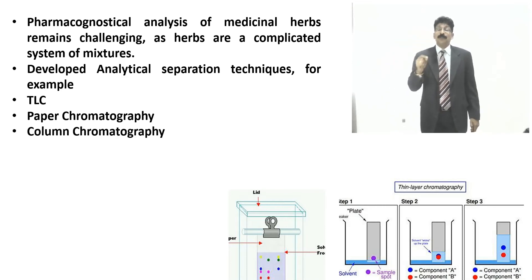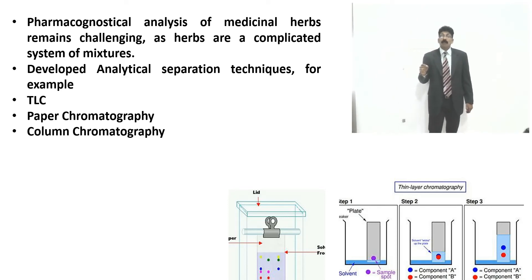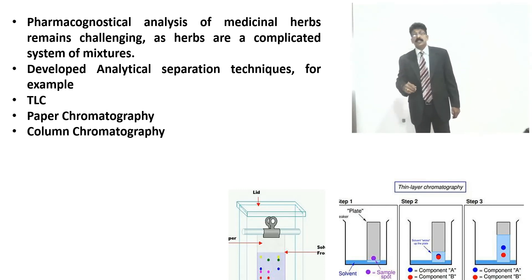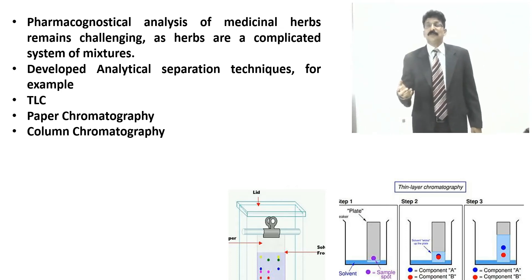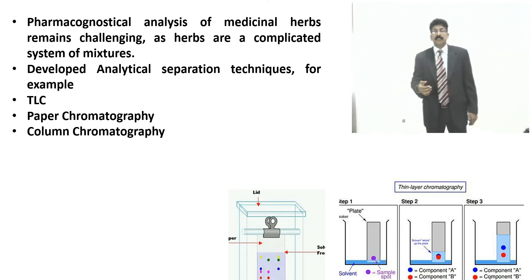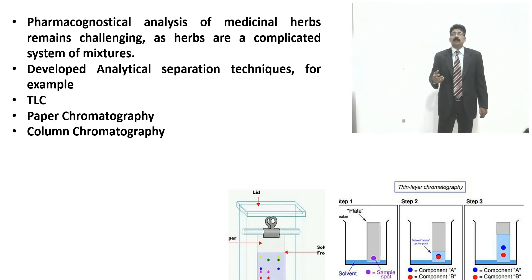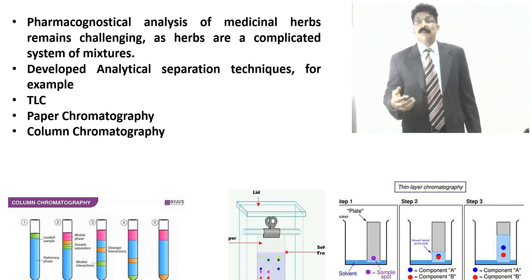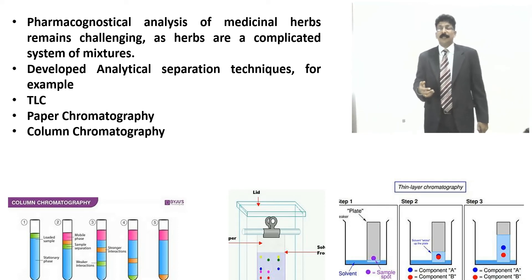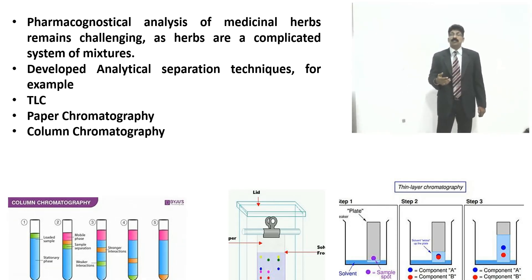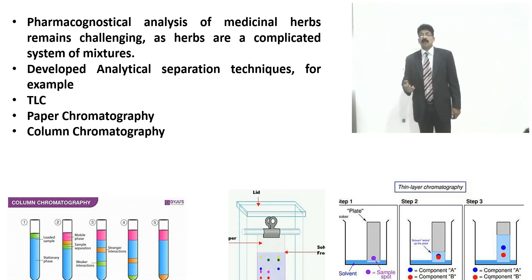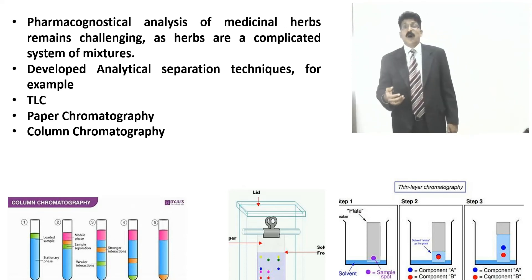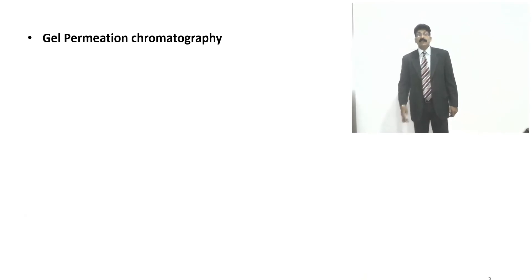Column chromatography is used for quantitative estimations, and for large-amount separations of certain compounds we have to go for preparative chromatography using big column chromatography. We have discussed this theoretically and studied it in Pharmacognosy and Phytochemistry 2 in your 5th semester. That knowledge is also necessary for understanding the application of chromatographic techniques in herbal drug standardization. We will also discuss gel permeation chromatography.